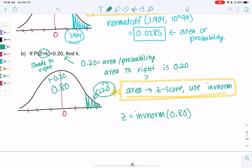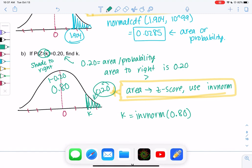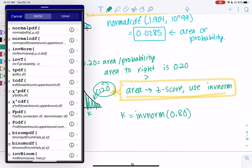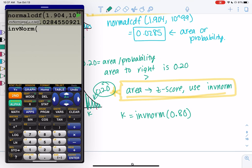We're calling that k, not z, but k is a z-score. We'll do inverse norm of 0.80. Second distribution, inverse norm. You have to do 0.80, right? It's always the left side. So draw the curve, don't just immediately plug in numbers. We get a z-score of 0.842.